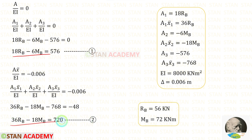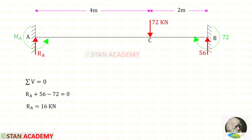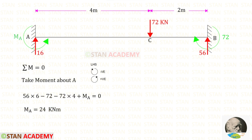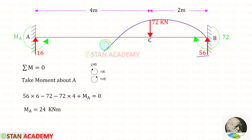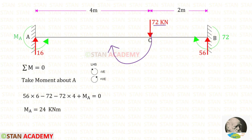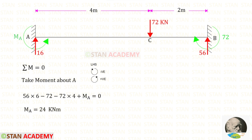By solving these two equations, we can get RB and MB. Using the rule ΣV = 0, we can find RA. Now let us take moments about A and find MA. We assume MA is acting in the anti-clockwise direction. RB is acting in the anti-clockwise direction, so it is positive with distance 6. The point load is acting in the clockwise direction, so it is negative with distance 4. MA is acting in the anti-clockwise direction, so it is positive. The positive result confirms our assumption — MA is acting in the anti-clockwise direction.